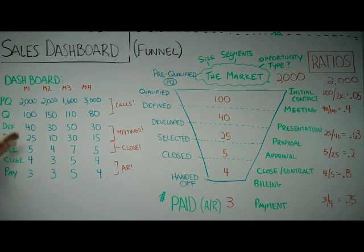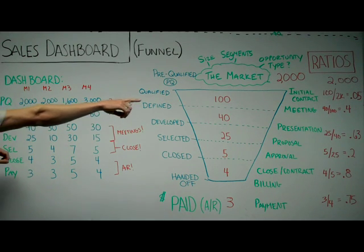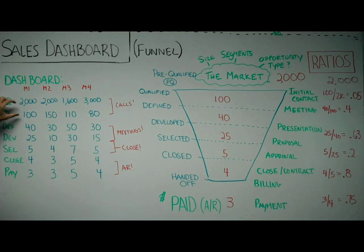So what that tells me is I've got these ratios that I'm, things I'm good at and bad at. And if you look over at these ratios, I've only spoken to 5% of my market. But 40% of those people wanted to continue learning more about the process and got a meeting. And then I was real good.